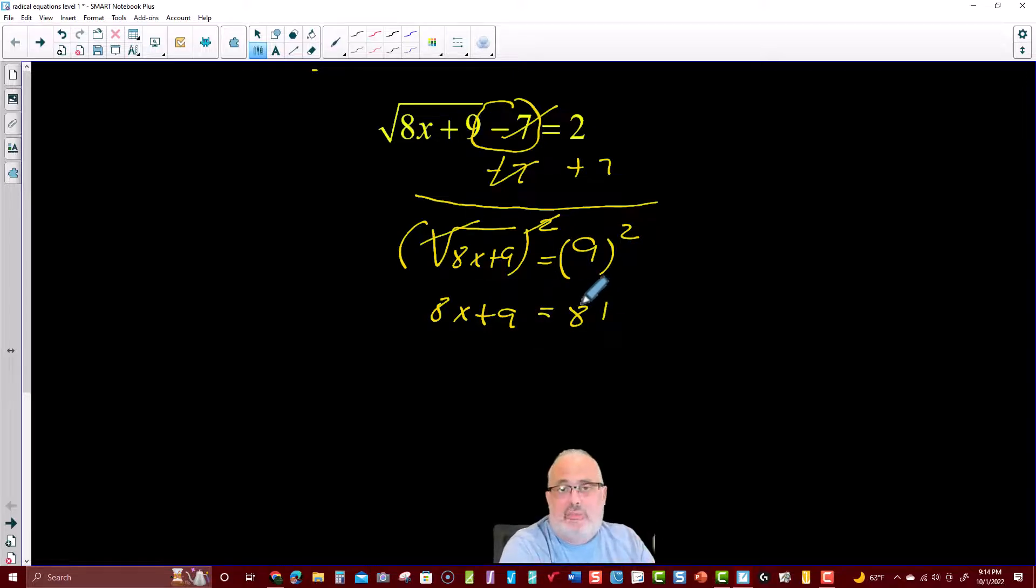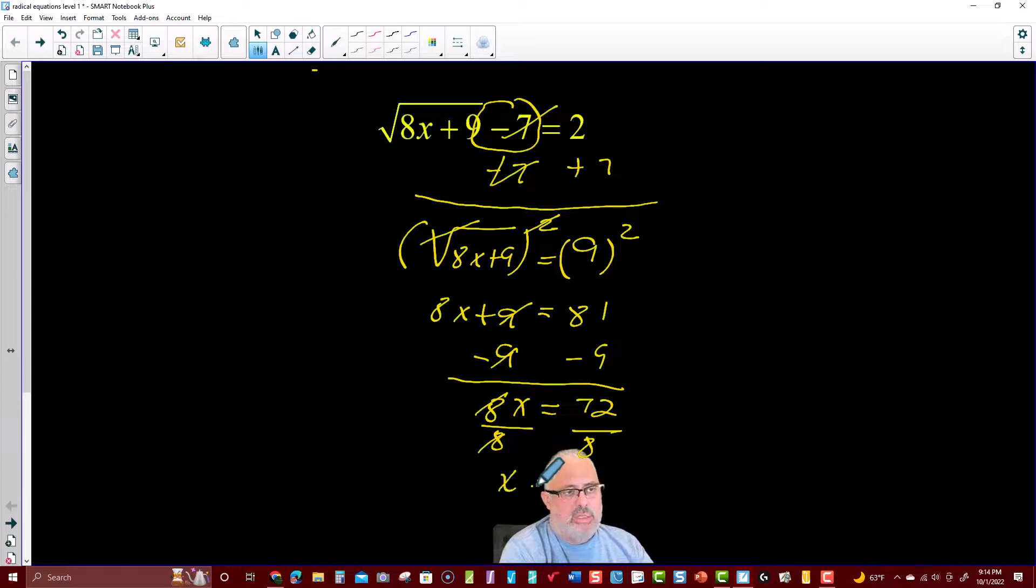So now I have in front of me a very simple two-step equation, and I can subtract 9 from both sides of the equation. 9 minus 9 is 0, and I have 8x equals 81 minus 9, which is just 72. We divide by 8, since 8 is the coefficient of the x, and cancel this out. So 72 divided by 8 equals 9, since 9 times 8 is 72.